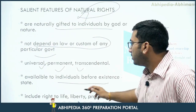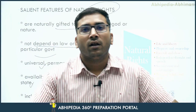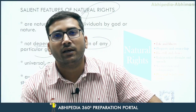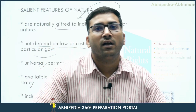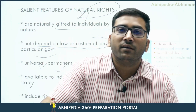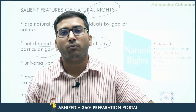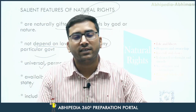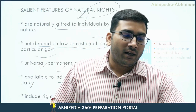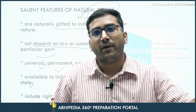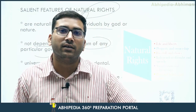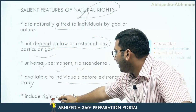Natural rights are available to individuals before the existence of the state. It was considered that the state comes first and individuals come later. The Father of Political Science, Aristotle, said that logically the state comes prior to man, but naturally man comes prior to the state. He believed in both concepts — that we have natural rights, and that the state does not give them because man comes first and state and society come after. However, the state is needed to protect those natural rights, and that is why Aristotle said logically the state comes first — to protect the natural rights of man. Natural rights include the right to life, liberty, and property.